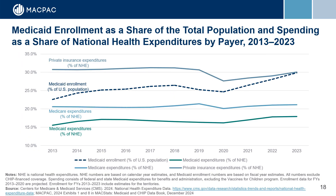Our next key statistics focus on Medicaid enrollment and spending compared to other payers. This graph shows Medicaid enrollment as a share of the total population and spending as a share of national health expenditures compared to private insurance and Medicare over time. Around 30% of the U.S. population was enrolled in Medicaid at some point during FY2023. In calendar year 2023, Medicaid accounted for about 18% of national health expenditures, less than Medicare at 21% and private insurance at 30%.